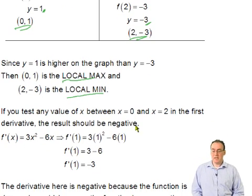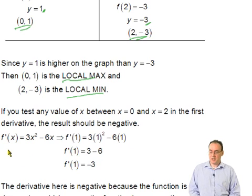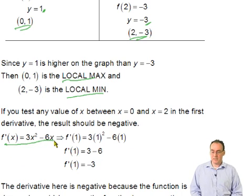So what we're saying is this. If you test any value of x between 0 and 2, in other words, when you go from your max down to your min, the first derivative should be negative. So let's test that. f'(x) = 3x² - 6x. If we put in any value between 0 and 2, we should get a negative answer for the derivative.